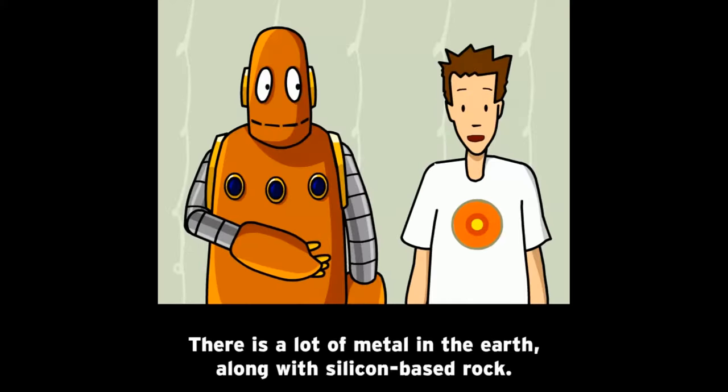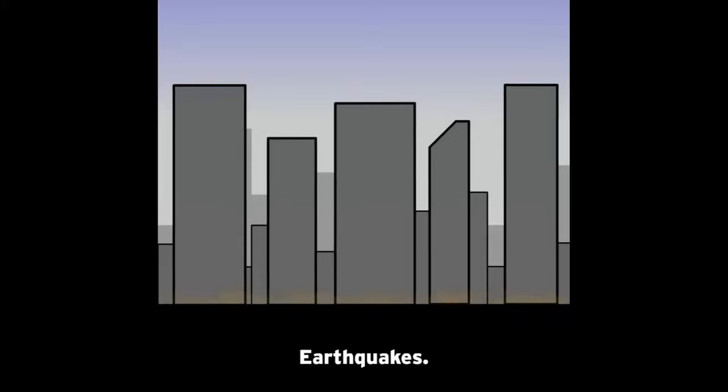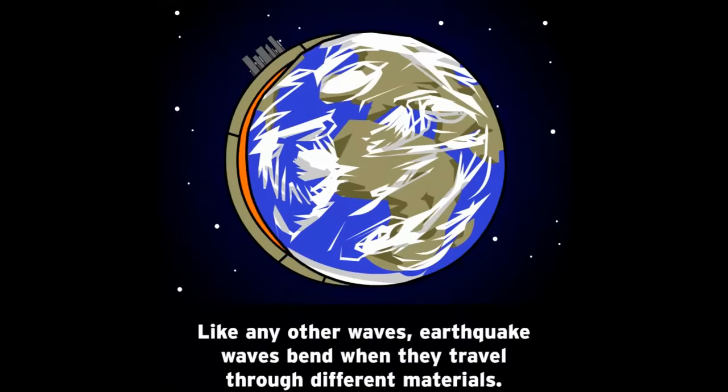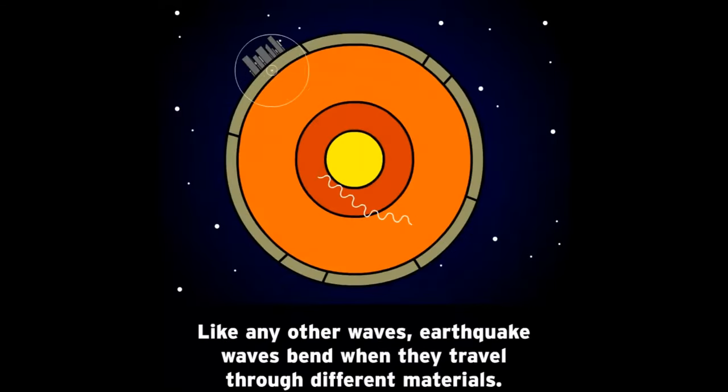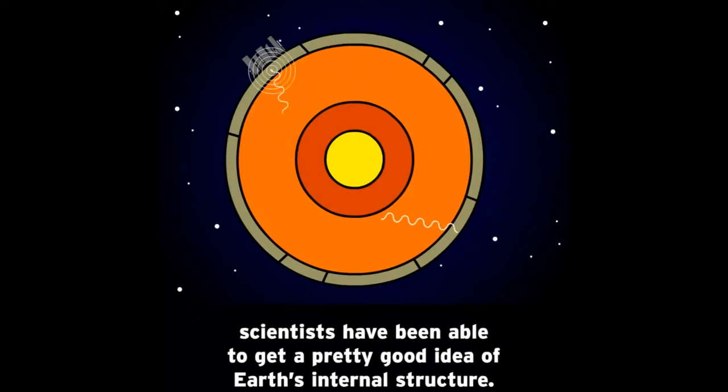Well, there is a lot of metal in the Earth, along with silicon-based rock. How do we know? Earthquakes. Like any other waves, earthquake waves bend when they travel through different materials. By studying the way earthquakes vibrate through the interior of the planet, scientists have been able to get a pretty good idea of Earth's internal structure.